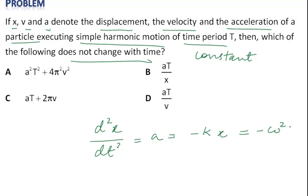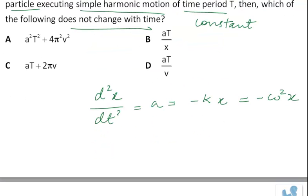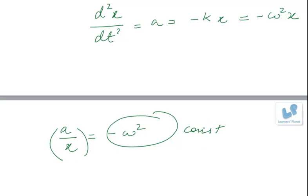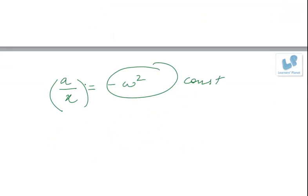So if we take the ratio of a/x, it will be -ω². Now this term is a constant. If we multiply anything with this expression which is a constant, then we will also get one more constant.